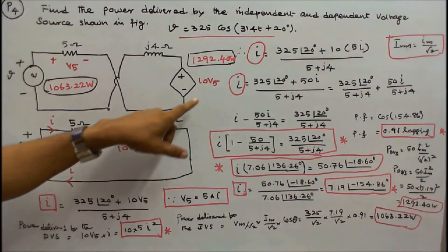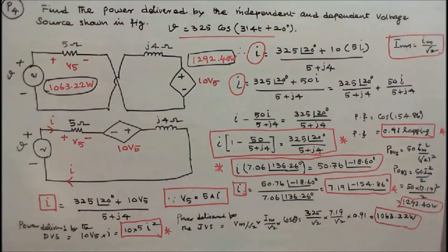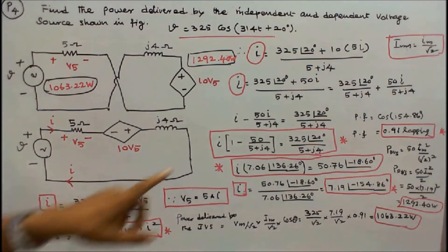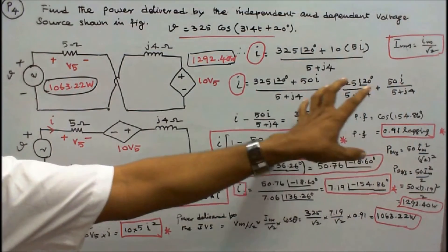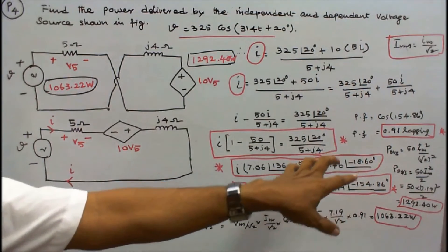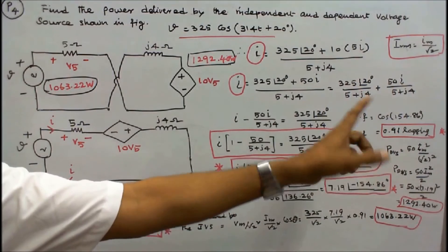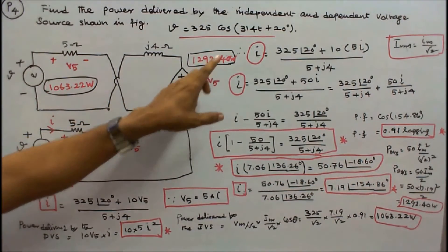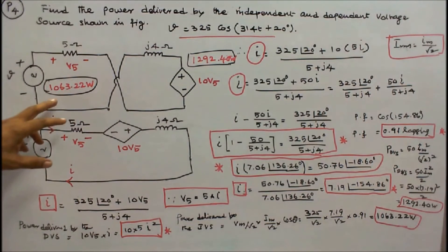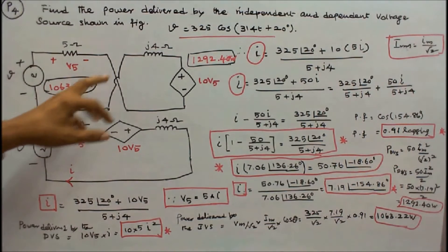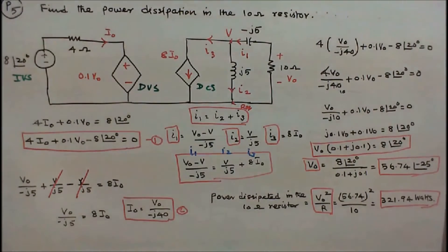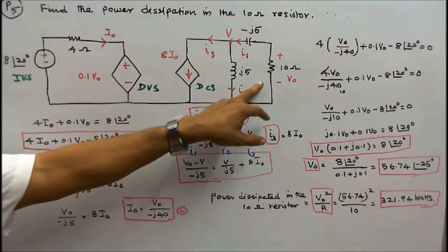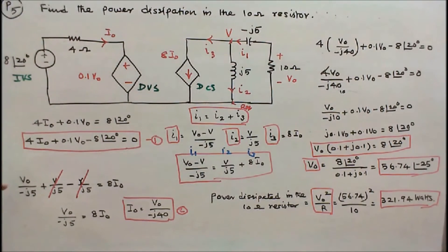Power delivered by the dependent voltage source is 10 times V5 times I. Since V5 equals 5 times I, this becomes 50 times I squared. Using RMS values: 50 times Im squared divided by 2 equals 50 times 7.19 squared divided by 2, which equals 1292.40 watts. Therefore power delivered by the dependent voltage source is 1292.40 watts.